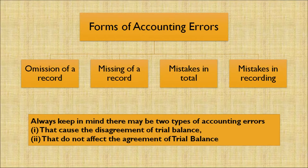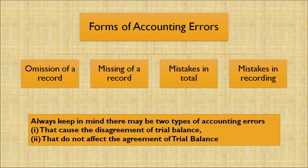There are four forms of accounting errors: first, omission of a record; second, missing of a record; third, mistakes in totaling; fourth, mistakes in recording. Let's discuss each type of accounting error in detail.